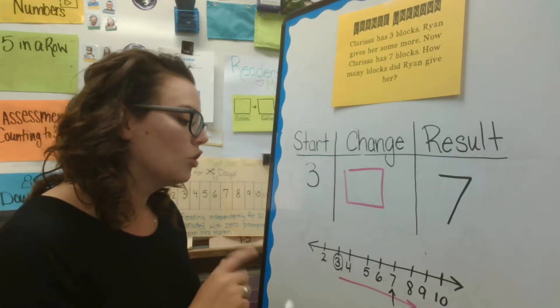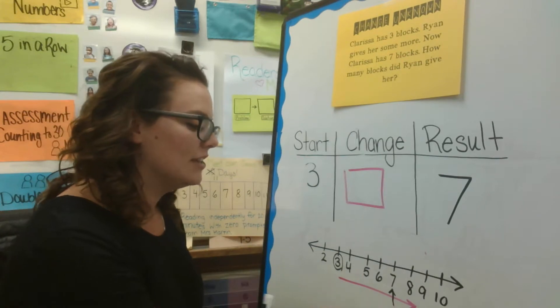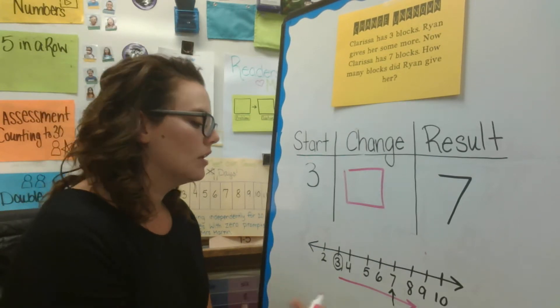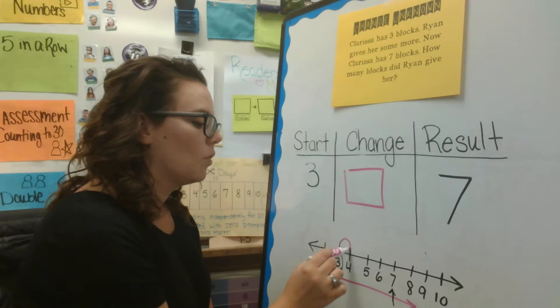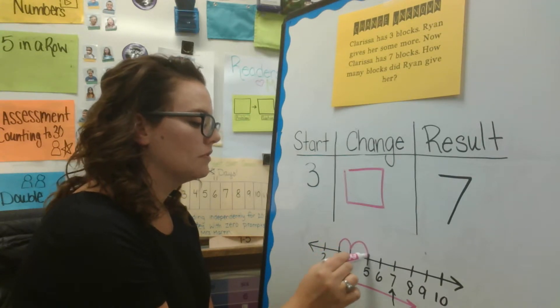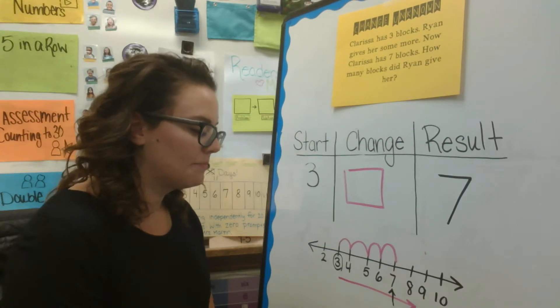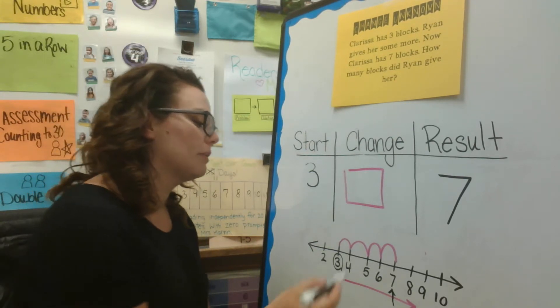And I'm going to count from three to seven by jumping on a number line. Let's get started. One, two, three, four. Okay, I made four jumps on a number line.